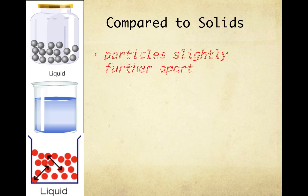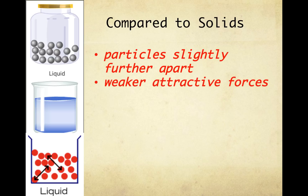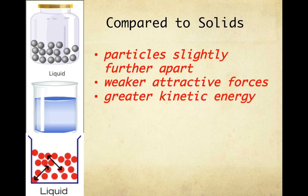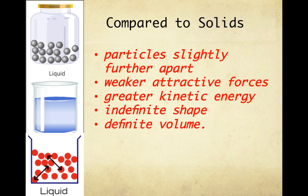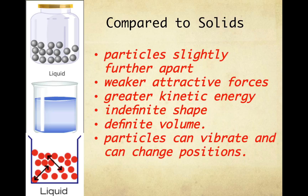Compared to solids, the particles of a liquid are slightly further apart. They have weaker attractive forces and greater kinetic energy. They have indefinite shape, which means liquids take the shape of the container that they're in, but they do have a definite volume. The particles can vibrate and they can change positions. This is why liquids can flow.